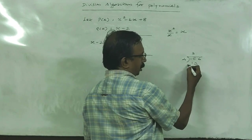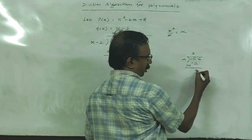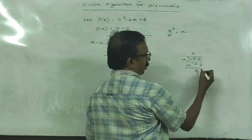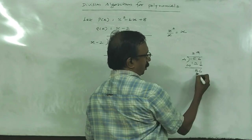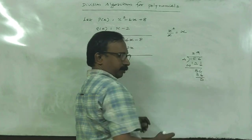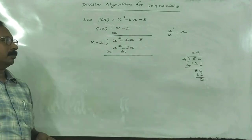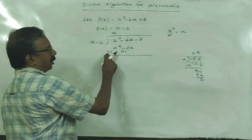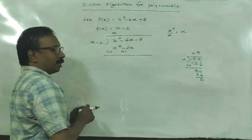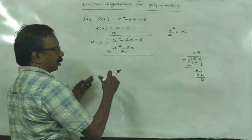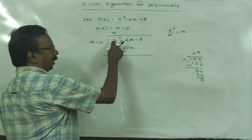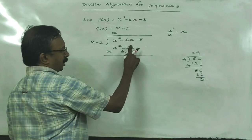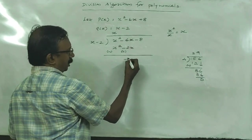Change the sign and add. Here we change the sign of this polynomial, and x² minus x² equals 0. Then -6x plus x gives -4x.